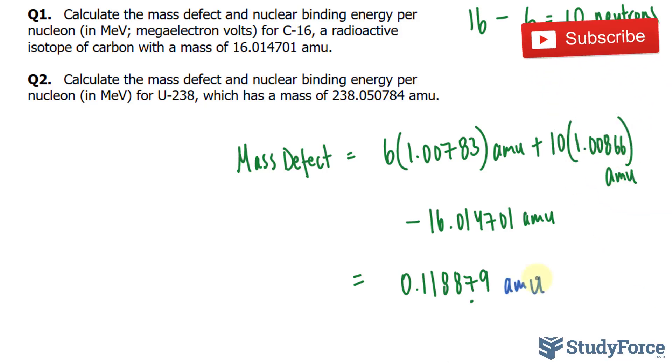Next, we want to calculate the nuclear binding energy per nucleon. To do this, we take this number and use the conversion where one atomic mass unit is equal to 931.5 mega electron volts. Once we convert this into mega electron volts, we can divide that number by the amount of nucleons per one atom, which is basically the amount of neutrons plus the amount of protons, 16 in this case. Let's do one step at a time.